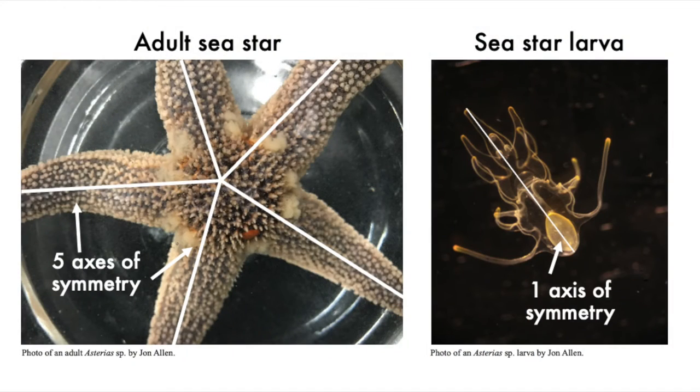Now, typically when we think of sea stars, we think of them as being pentaradially symmetrical, meaning they have five axes of symmetry, one along each of their arms. But that is just the adult phase of sea stars. Sea star larvae — the young — are bilaterally symmetrical, like us. They have one axis of symmetry.